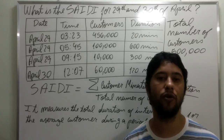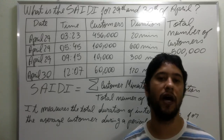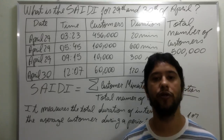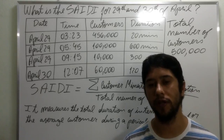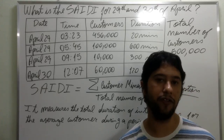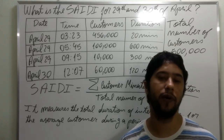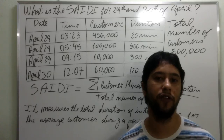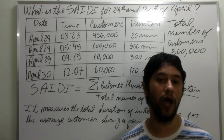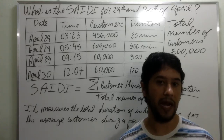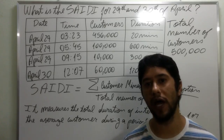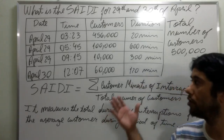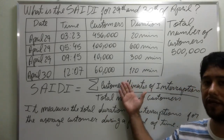On this video I'm going to talk to you guys about the System Average Interruption Duration Index, SETI, as it was defined by the IEEE standard 1366 of 2012, Electric Power Distribution Reliability Indices, and to do this I brought to you this exercise.